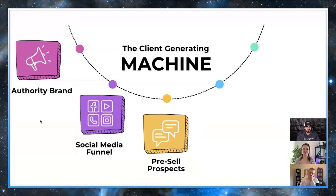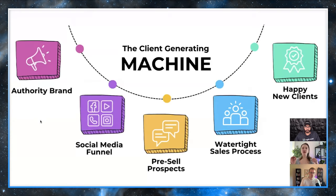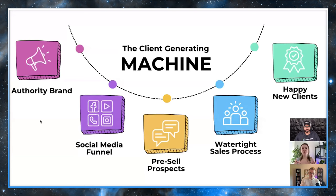Cam is going to be showing the tech stack behind this — how we do it all in HighLevel, how we pre-sell prospects so that by the time they get to a sales conversation, they're already sold. It really begins with the authority brand, because if we have the authority brand and the social media funnel, everything works seamlessly together to bring in new happy clients — that's how the client generating machine works.